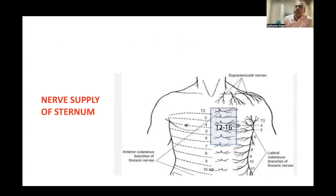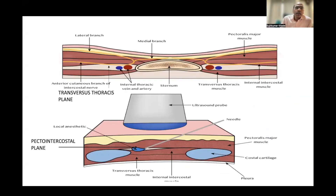Coming to the nerve supply of the sternum: the sternum is supplied by sensory dermatomes T2 to T6. The upper part of the sternum is supplied by the supraclavicular nerve and transverse cervical nerve, and the lateral part by the lateral branches of the intercostal nerves.